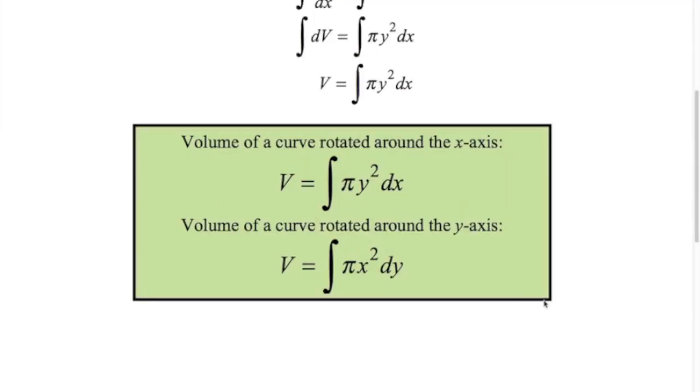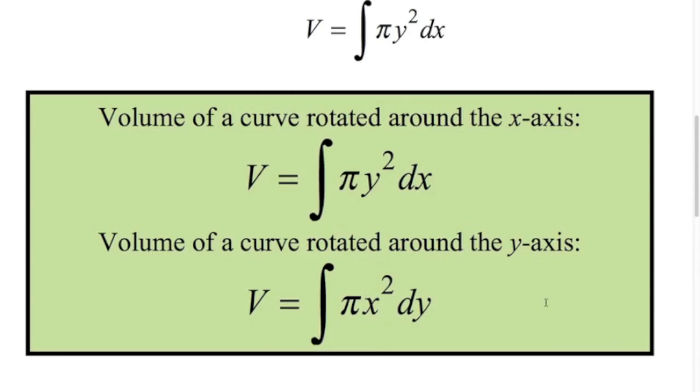Here's both formulas for volumes of curves being rotated around the x-axis and around the y-axis. These two formulas aren't given to you on the formula sheet, so you have to memorize them. The way I remember is just the formula for the volume of a cylinder, pi r squared h. So here, pi y squared dx.